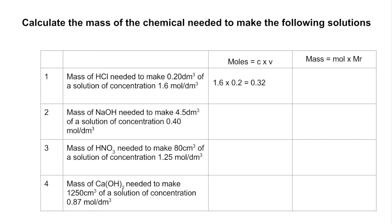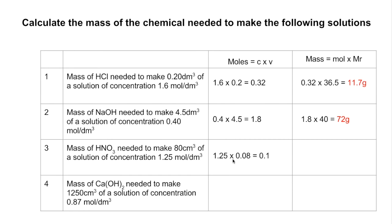Working through the answers: Q1 requires 0.32 moles of HCl, so mass = moles × Mr = 11.7 grams. Q2 requires 1.8 moles of NaOH, giving a mass of 72 grams. Q3 has the volume in cm³ — 80 cm³ = 0.08 dm³ — so we need 0.1 moles of HNO₃, giving a mass of 6.3 grams.